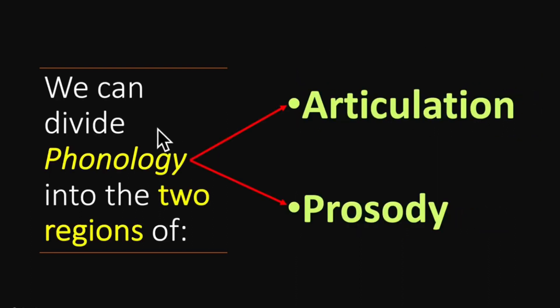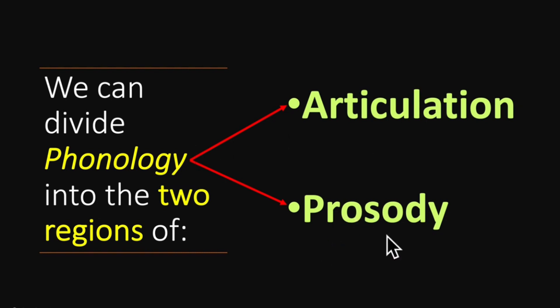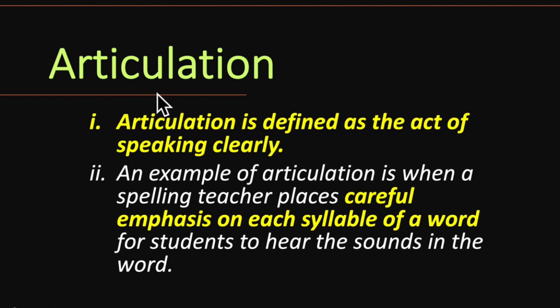We can divide phonology into two broad regions: articulation and prosody. Phonology can be largely categorized into these two broad categories. The first one is articulation and the second one is prosody. Let's first discuss articulation. Articulation is defined as the act of speaking clearly.